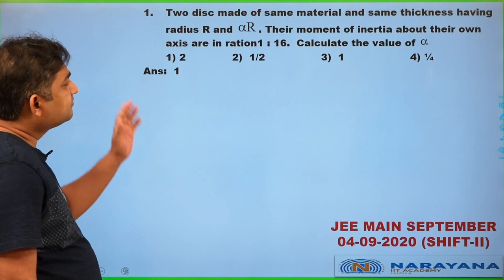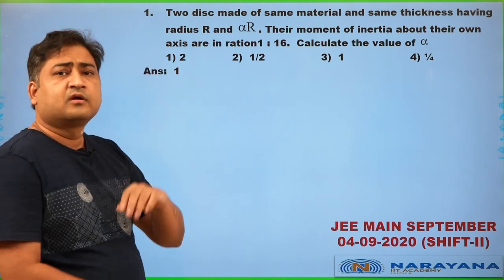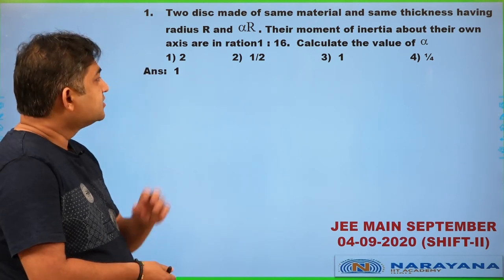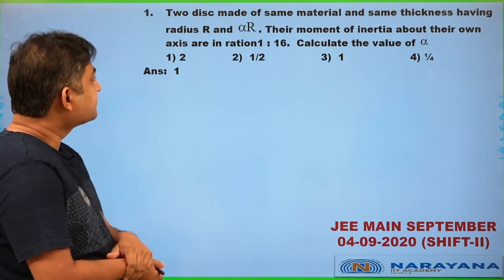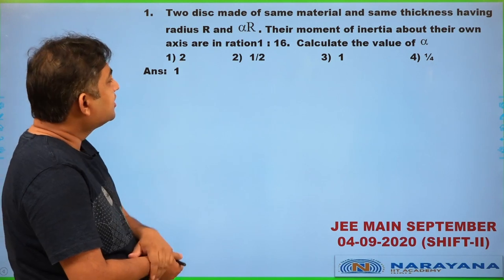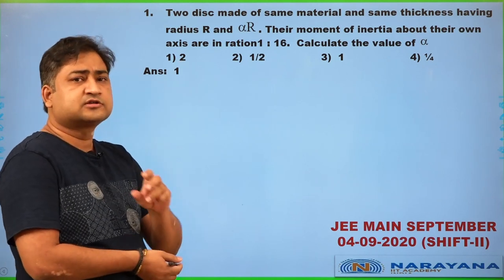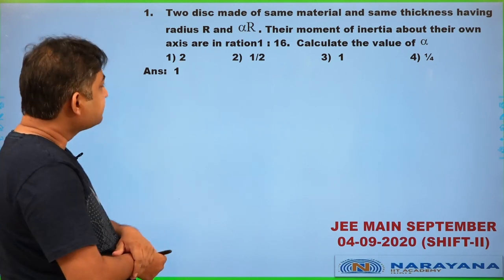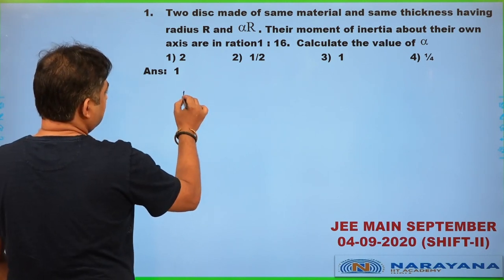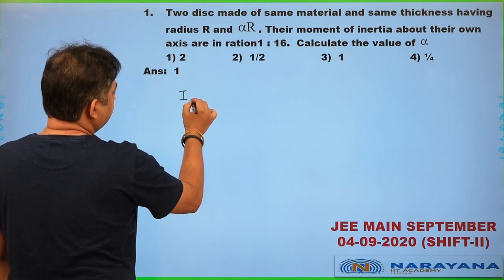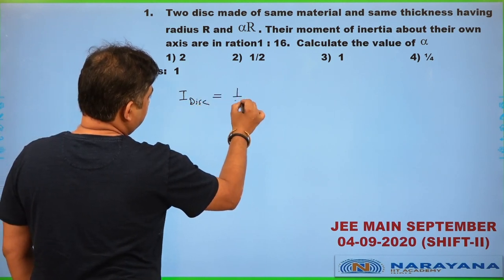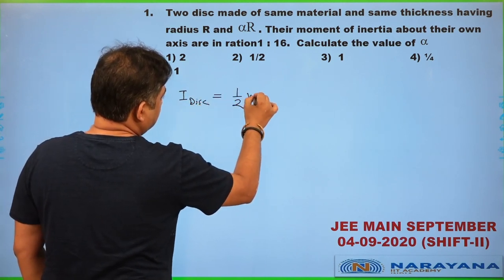Here there are two discs made up of the same material and same thickness; just their radius is different, and their mass densities are the same. We need to compare their moment of inertia about the axis of symmetry. The moment of inertia of a disc is (1/2) m r².